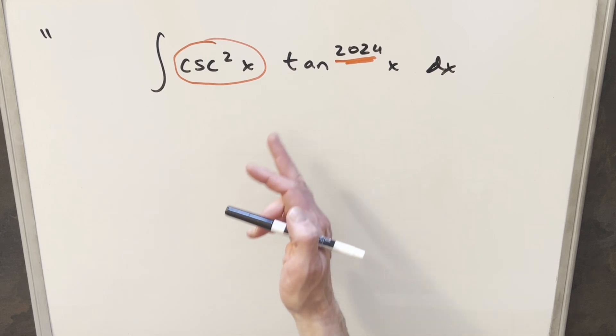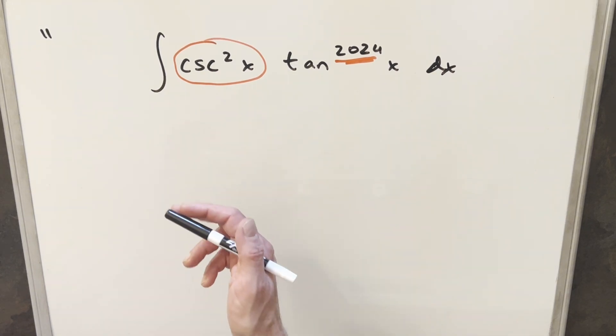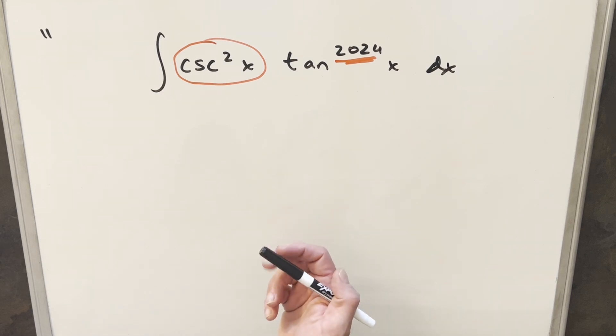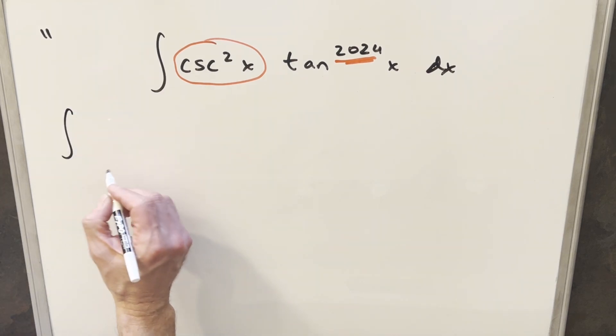So first, I wasn't really sure how we're going to get tangent to work with cosecant, but what we can do is actually write everything in terms of sines and cosines. Sine and cosines work together. Maybe that'll clean things up. So let's just rewrite it.